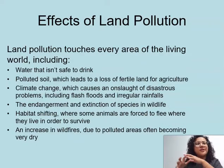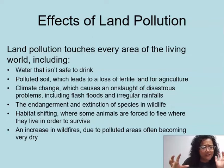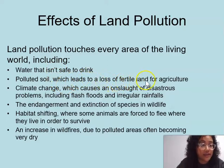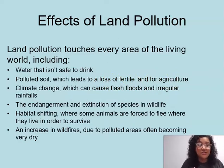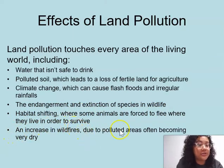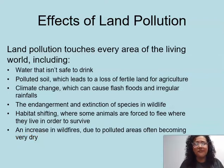Now that we've talked about the different types of land pollution, let's talk about the effects, because every cause has an effect. Because of land pollution, some effects that touch almost every living area of the world include water that isn't safe to drink, polluted soil which leads to a loss of fertile land for agriculture, climate change which can cause flash floods and irregular rainfall, the endangerment and extinction of species and wildlife, habitat shifting where animals are forced to flee their homes to survive, and an increase in wildfires due to polluted areas becoming very dry. Think about how all those effects affect not only animals and the land, but how they affect us too.